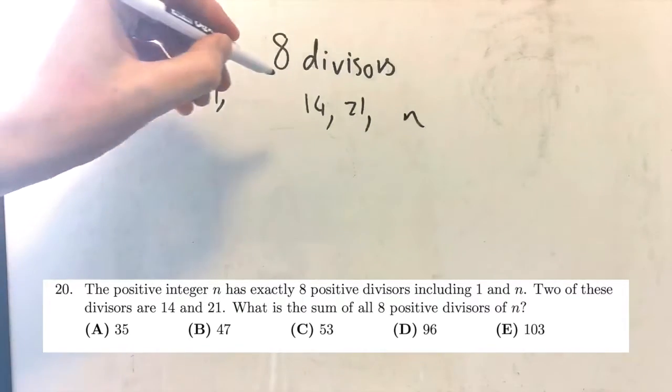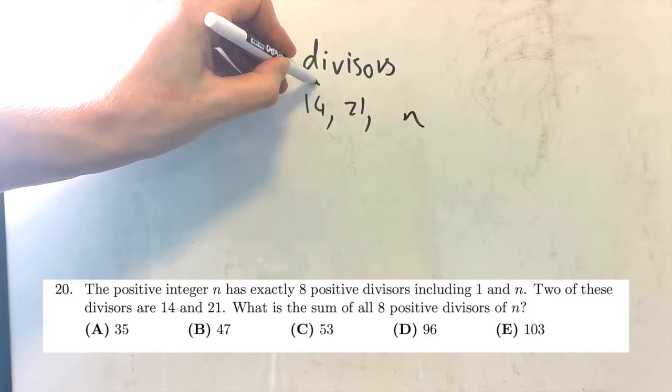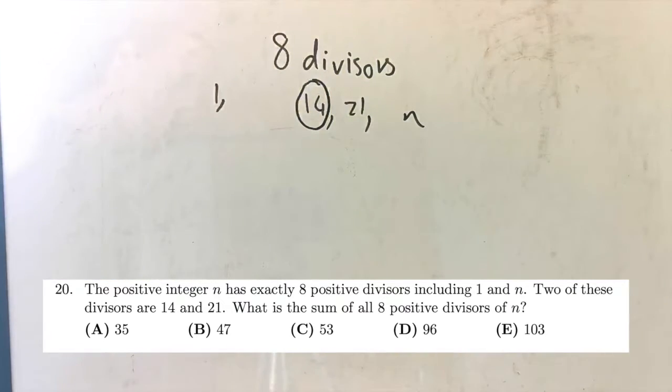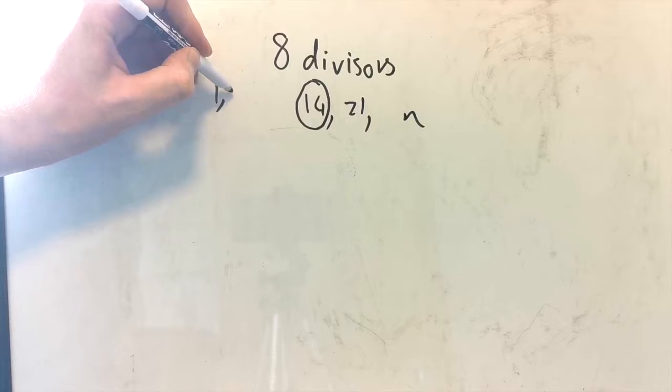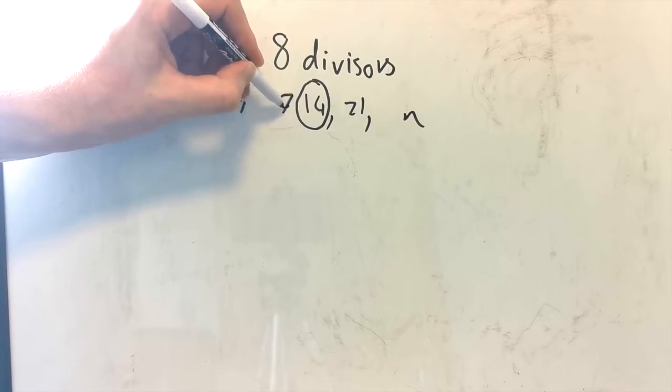Now, you have to be a bit of a detective here. You actually have got more than it seems. If something's divisible by 14, it must also be divisible by 2. And it must also be divisible by 7. Everything that's in the 14 times table is in the 2 times table. Everything that's in the 14 times table is also in the 7 times table. So we know it can be divided by 2 and by 7.